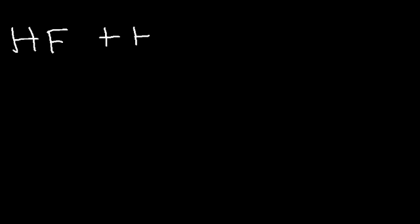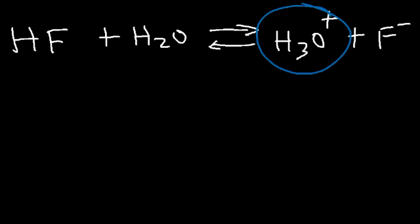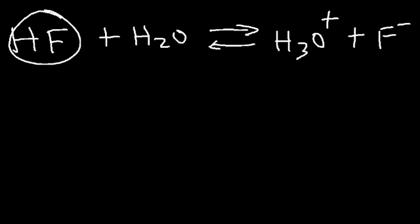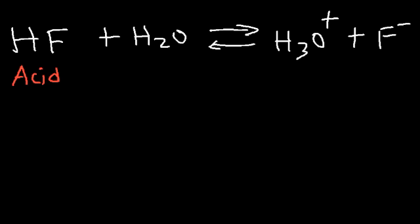Consider the reaction between hydrofluoric acid, which is a weak acid, and water. These two react reversibly, producing H3O+ and fluoride. HF is an Arrhenius acid because it releases hydronium ions, but it's also a Brønsted-Lowry acid because it's a proton donor — HF donated a hydrogen to water. Water was the proton acceptor, accepting the hydrogen as it turned into the hydronium ion, making water the Brønsted-Lowry base.